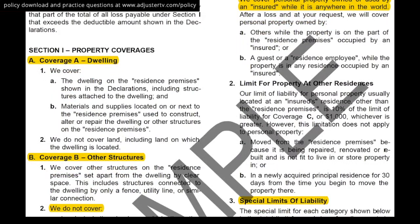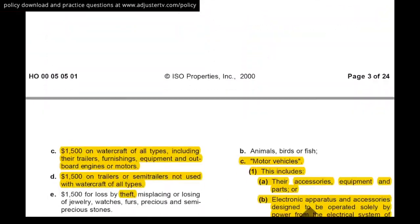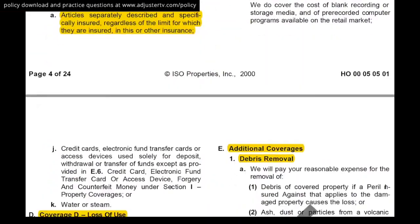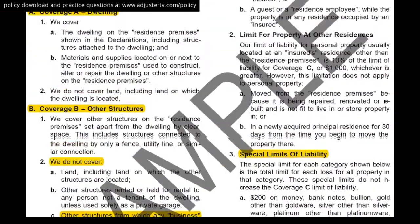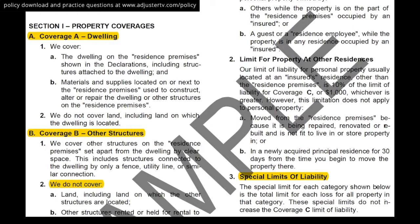Now moving to property coverages. Coverage A is dwelling, Coverage B is other structures, Coverage C is personal property, and Coverage D is loss of use — additional living expense. Those are the main coverages we deal with as catastrophe adjusters. The dwelling is mainly the main house — the residence premises where the insured lives. Interestingly, this policy also covers materials and supplies located on or next to the residence premises used to construct, alter, or repair the dwelling. So if they have construction material in the driveway and a hailstorm ruins it, that can be covered under dwelling coverage. We never cover land.